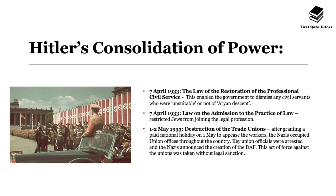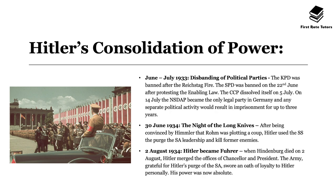Also on 7th April 1933, the law on the admission to the practice of law was passed, which restricted Jews from joining the legal profession. Between 1st and 2nd May 1933 there was also the destruction of trade unions. After granting a paid national holiday on 1st May to appease workers, the Nazis occupied union offices throughout the country, key union officials were arrested, and the Nazis announced the creation of the DAF. This act of force against the unions was taken without any legal sanction.